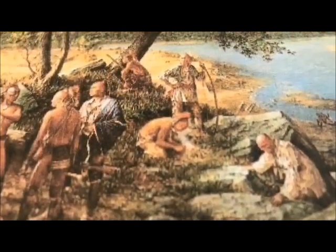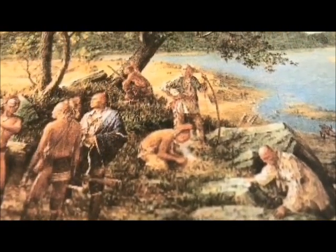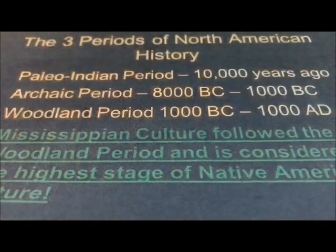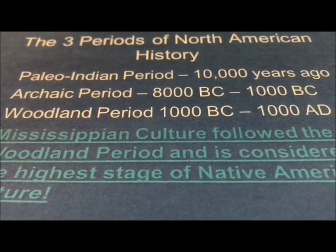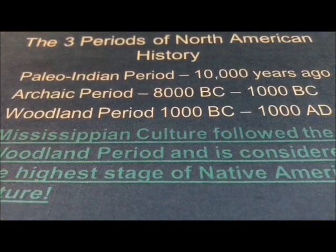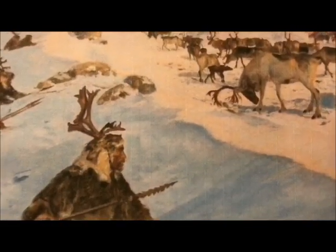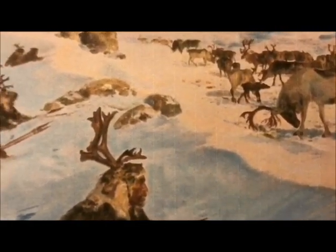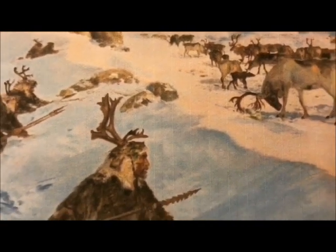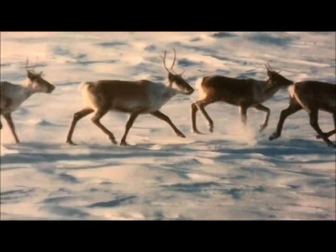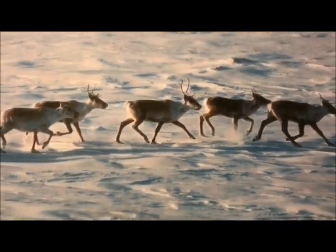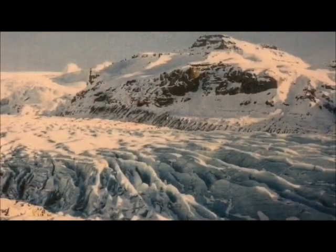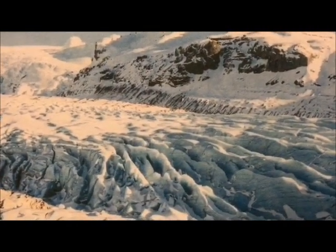Before we go any further, who were the Pocumtuc natives of the upper Connecticut River Valley? To answer that question, we must go back in time — let's say 10,000 years. Paleo hunters traveled the Connecticut River Valley, leaving behind many campsites which have been accurately carbon dated. The valley and its watershed attracted game which included great herds of caribou. Western Massachusetts would have looked much like the Arctic Circle of today.